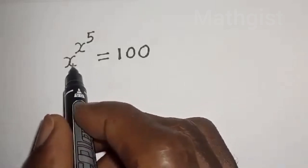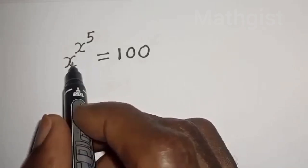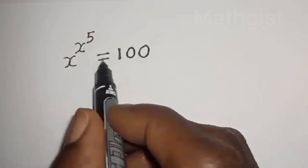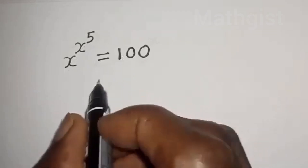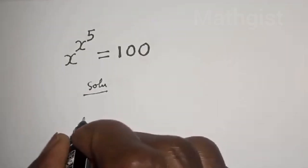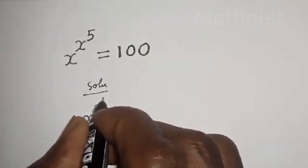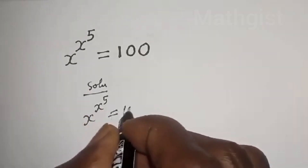How to solve for s in this equation: s raised to the power of s raised to the power 5 is equal to 100. Solution: We have s raised to power s raised to power 5 is equal to 100.